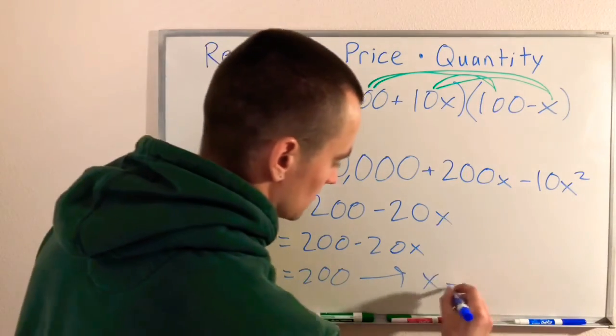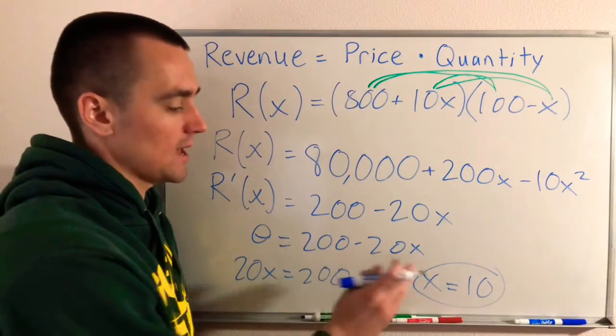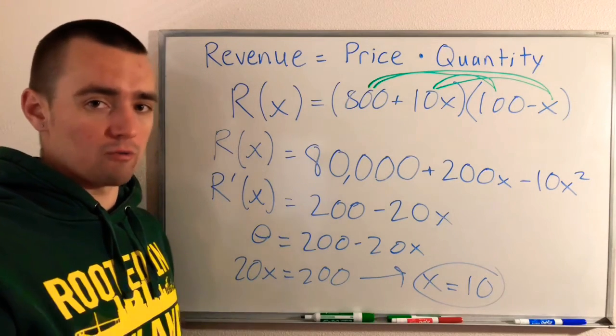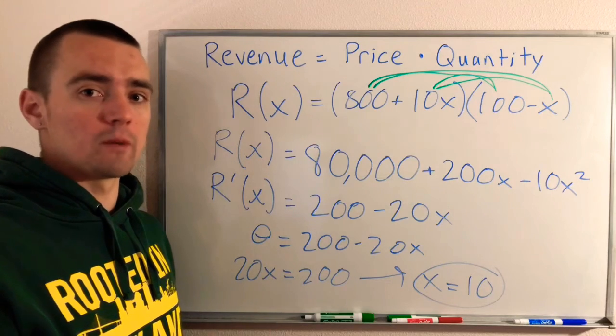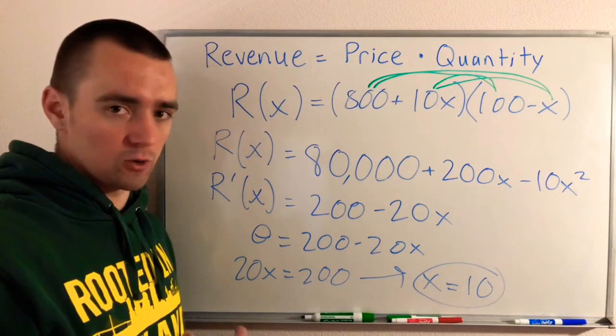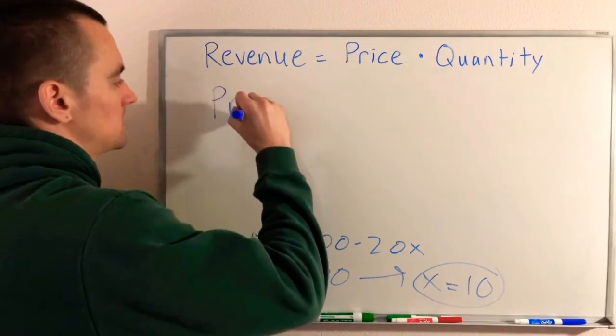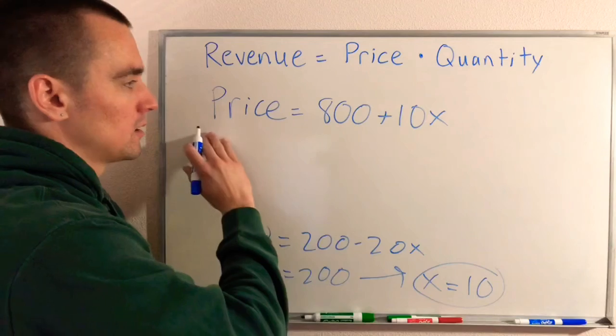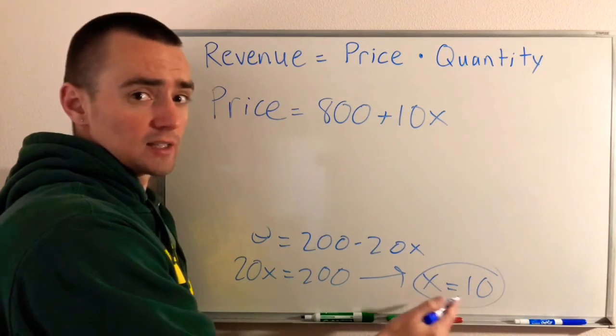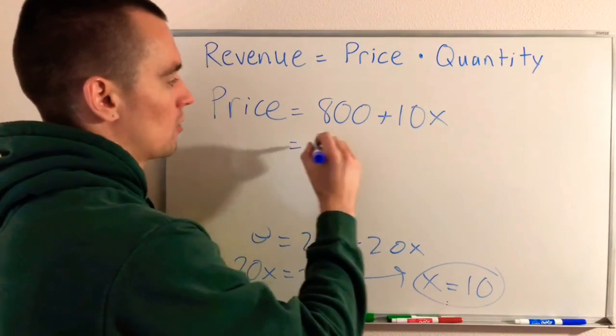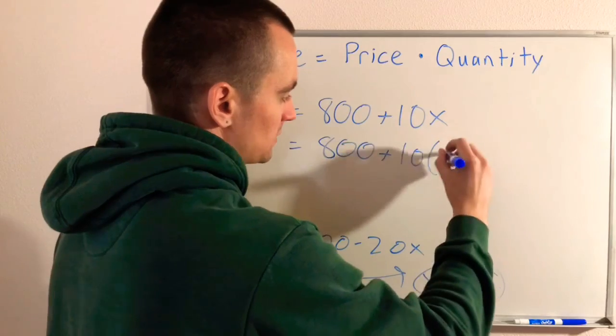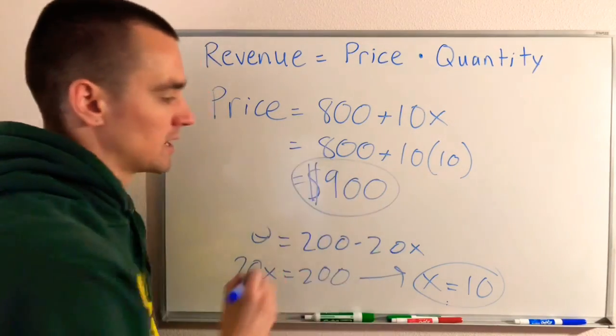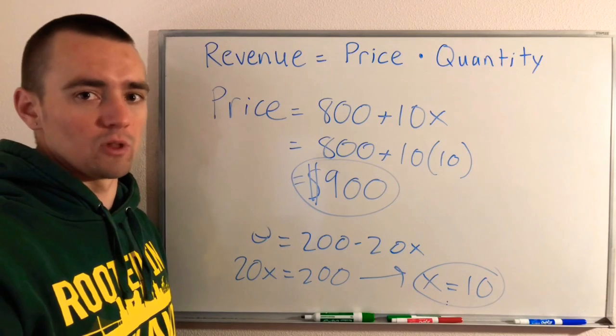We're not quite done yet because X is not our answer. Remember, X represents the number of $10 increases we're applying to the rent, but the question asks what should the manager charge for rent. So we need to think back to our price equation: Price = 800 + 10X. We know that when X is 10, our revenue is maximized. So if we take 10 and plug it in, we get 800 plus 10 times 10. 10 times 10 is 100, so 800 plus 100 is 900. Our manager should charge $900 per month for rent to maximize the revenue from this apartment complex.